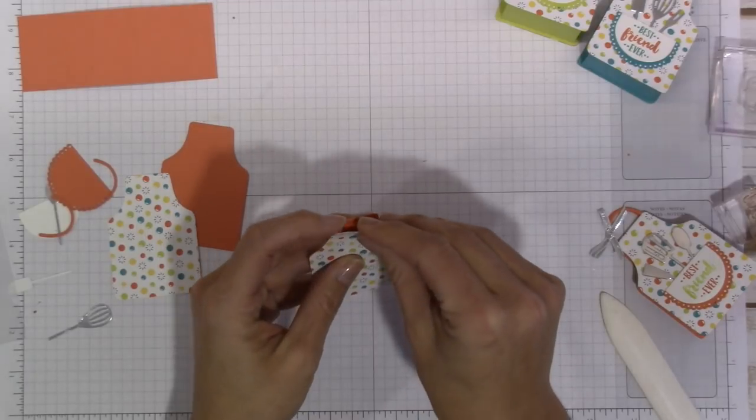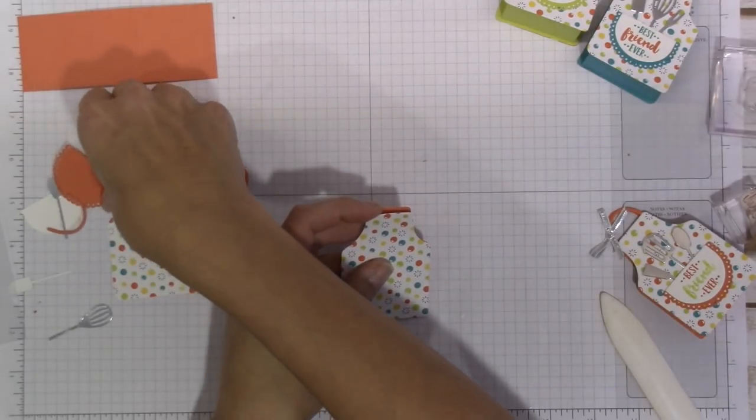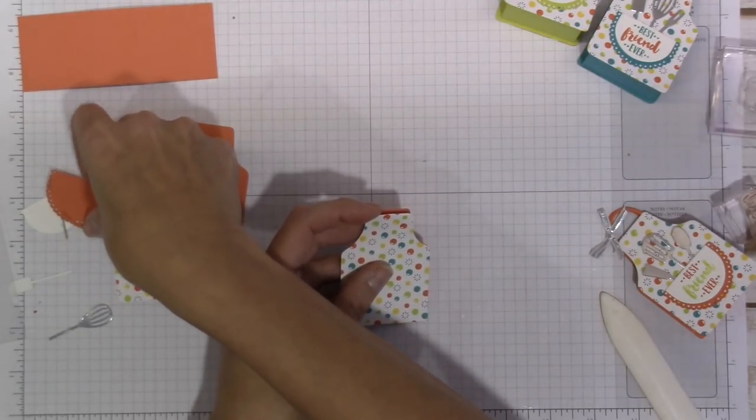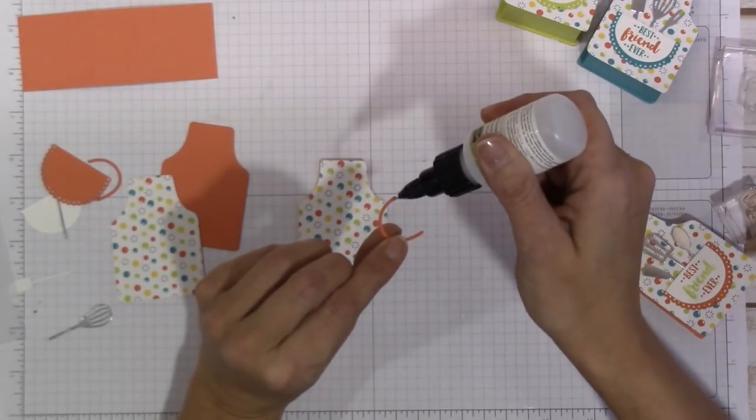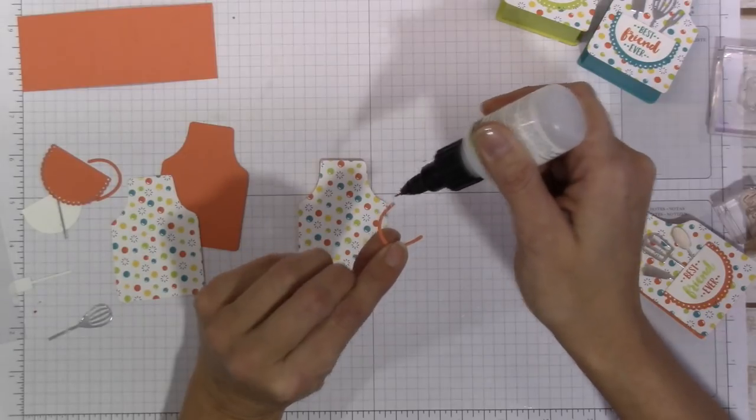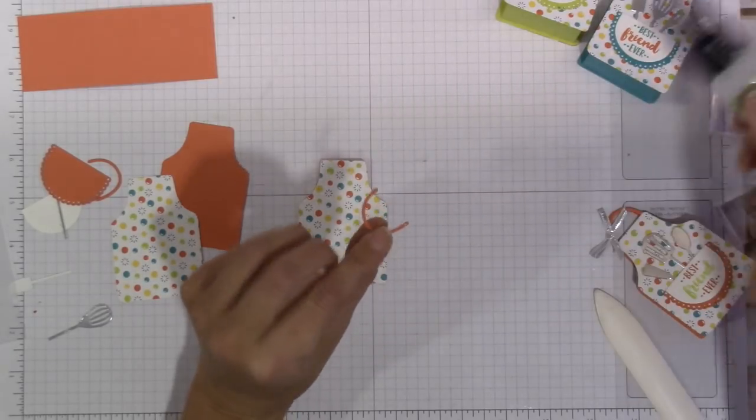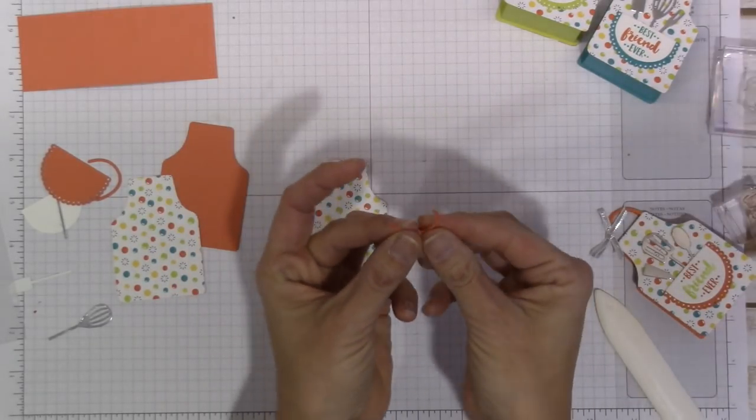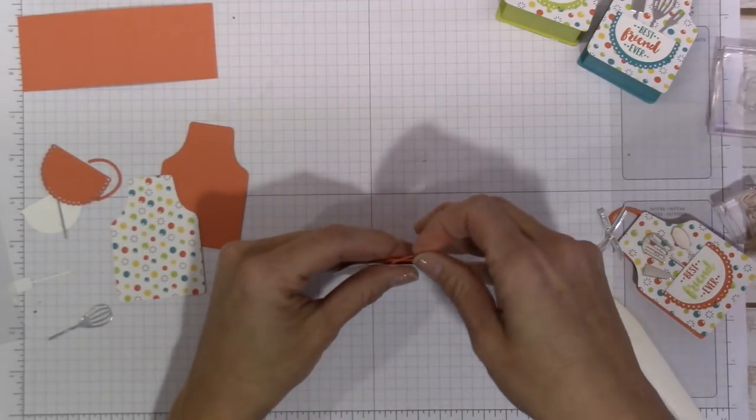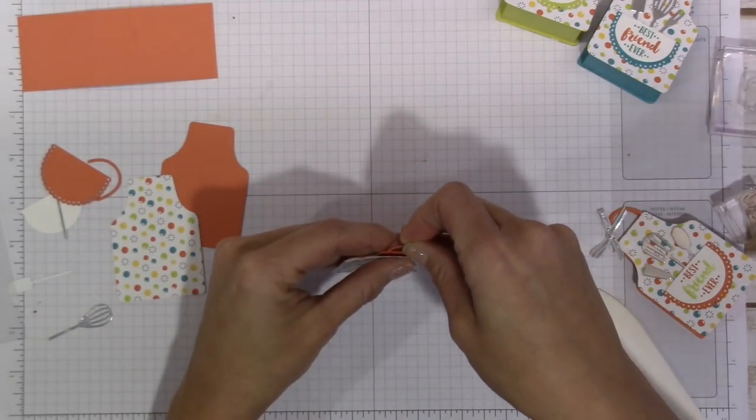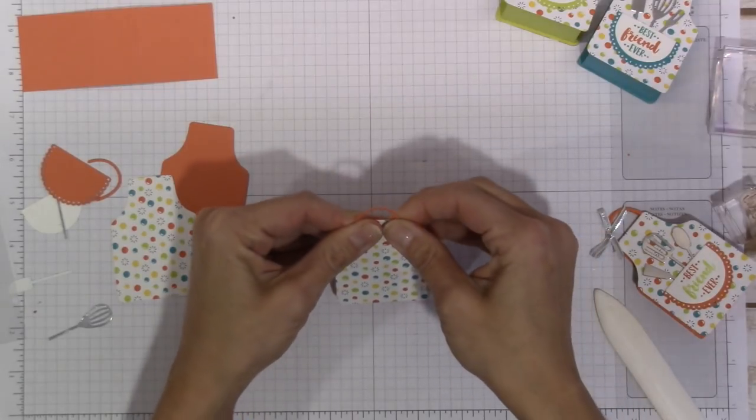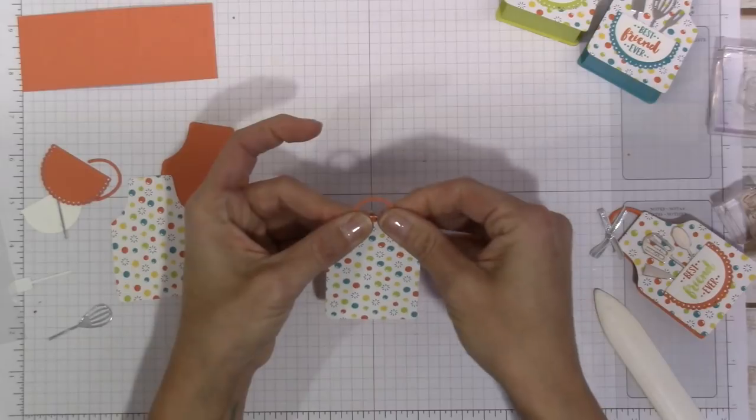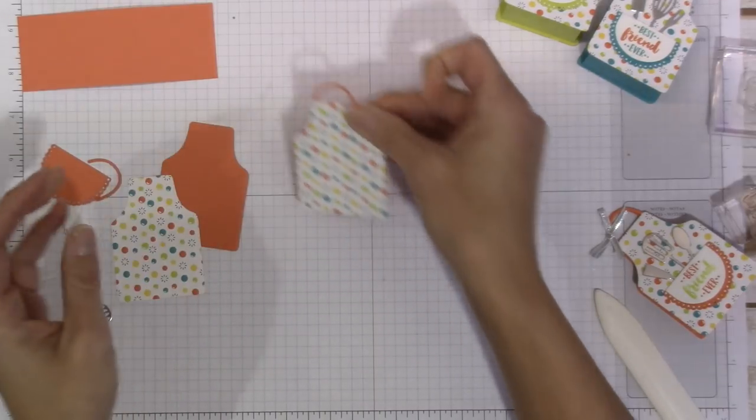And before I do that, I want to attach my handles. So I totally forgot about my little handles. So you're just going to want to put a little tiny bit of adhesive on just the edge here, and then that is going to go down in between our pattern paper and our cardstock, so just like this. And then I'm going to do the same on the other one.